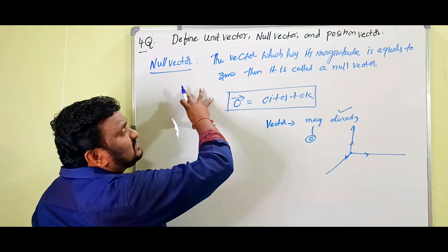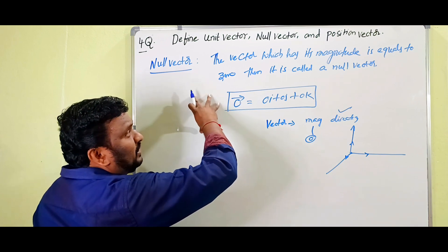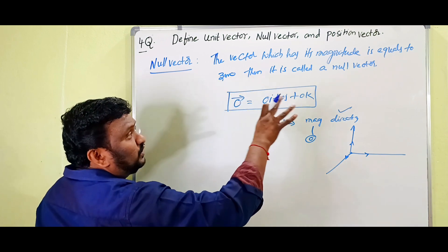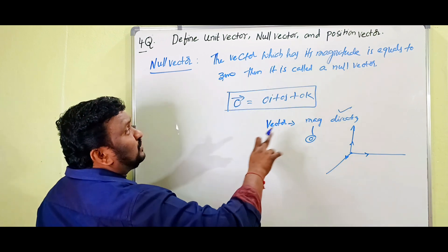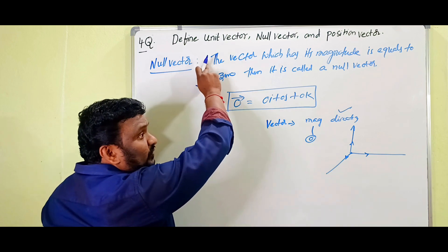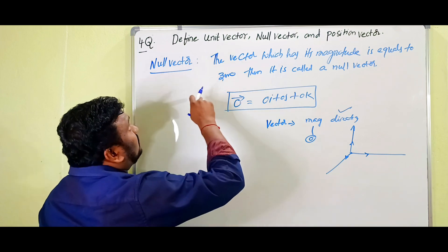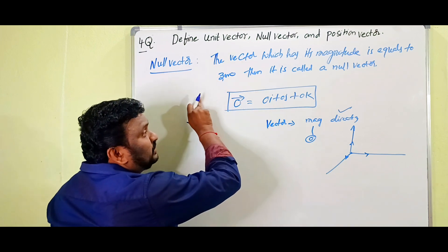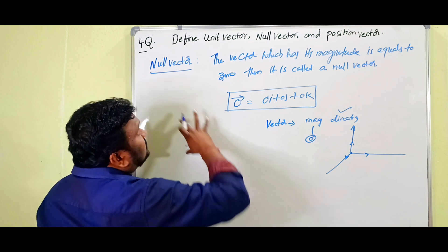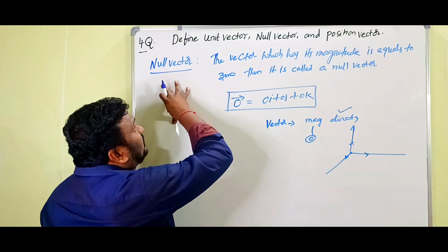This is about the null vector. For a 4-marks question: unit vector gets 1 mark, null vector gets 1 mark, and position vector gets 2 marks. This is the null vector summary, children.